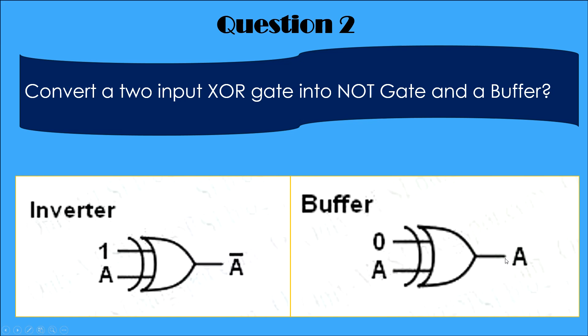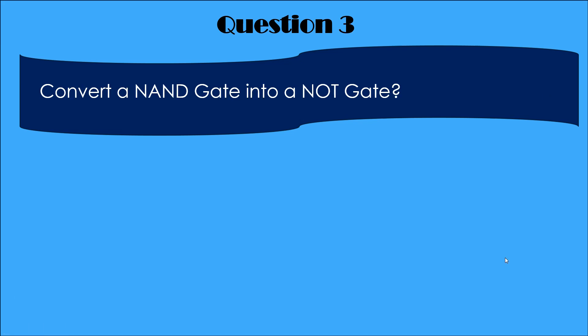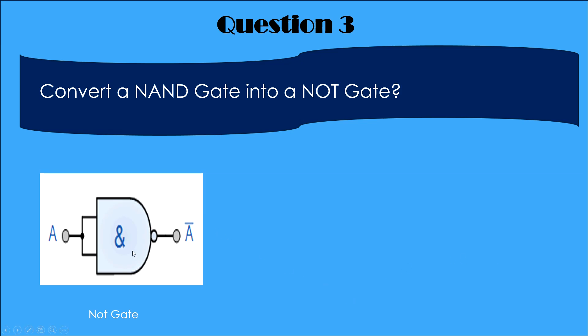When you will give 1 at the input, you will get 1 at the output. Question number 3. Convert a NAND gate into a NOT gate. And the answer is, tie both of its input to each other and make a single input. So this will work as a NOT gate.